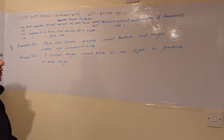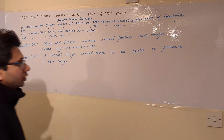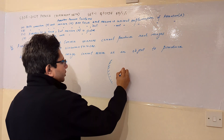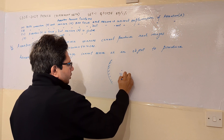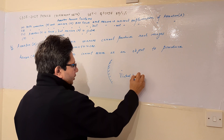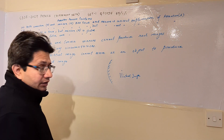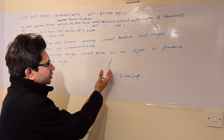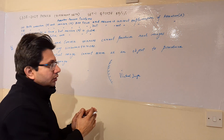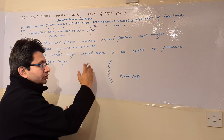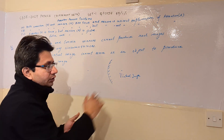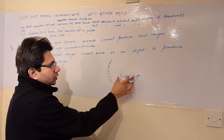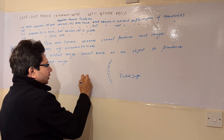The reason is wrong because a virtual image can serve as an object to produce a real image. For example, consider a convex mirror — it forms some virtual image of any object. This particular virtual image can act as an object, and this object can create a real image. A real image means the image is formed in front of the mirror; if formed behind the mirror, it is a virtual image. So this virtual image can act as an object and produce a real image.